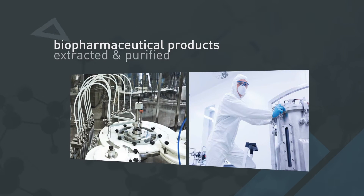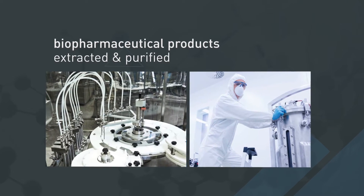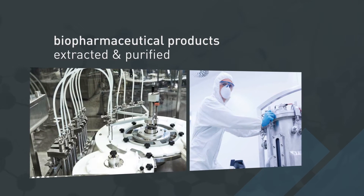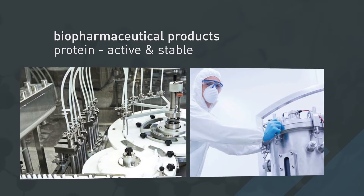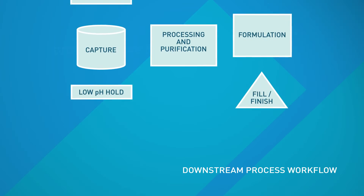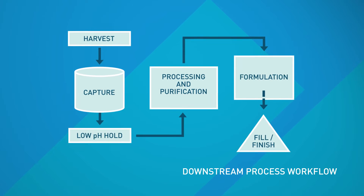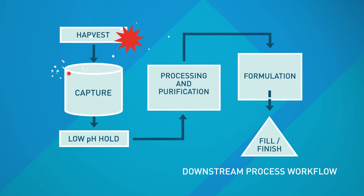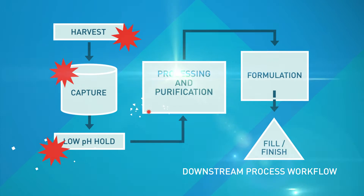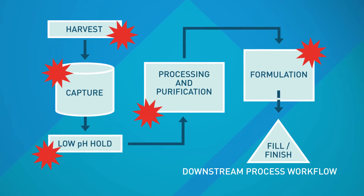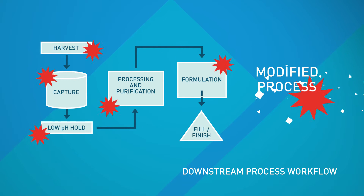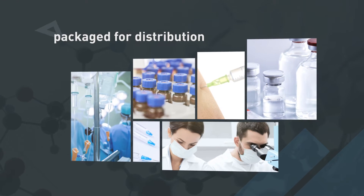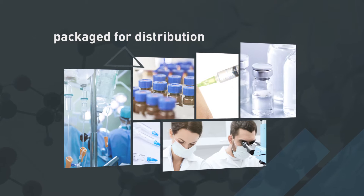Biopharmaceutical products are extracted and purified from mammalian cell lines during process development and manufacturing, under conditions where the protein drug remains active and stable for its full shelf life. During downstream process development and manufacturing, there are several steps which can stress the protein, so it's important to monitor it to ensure the process does not affect its structure, function, or stability, or that any changes to the process do not adversely affect the protein drug product. The final drug product is packaged in syringes or vials for distribution.